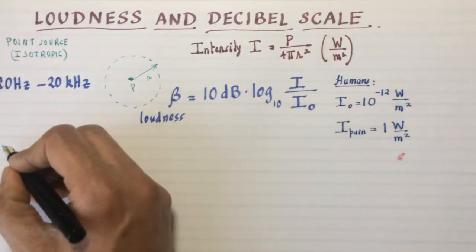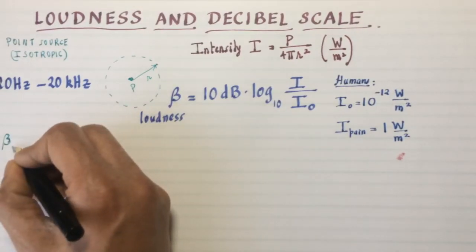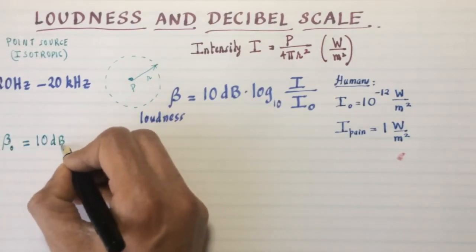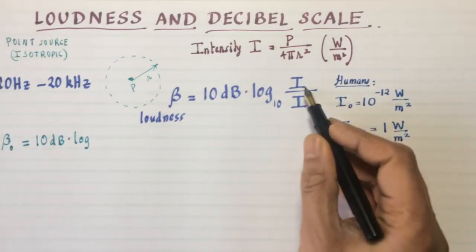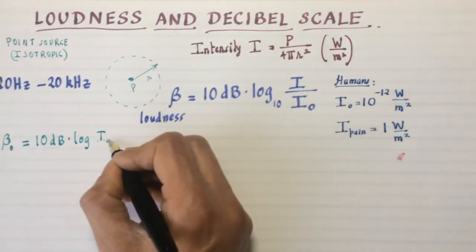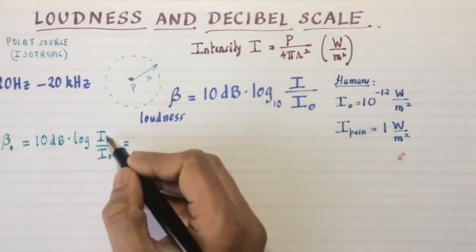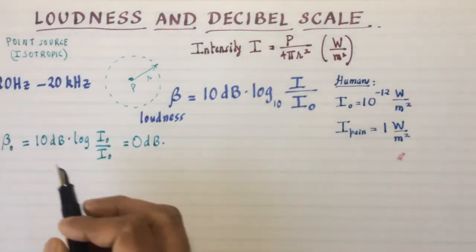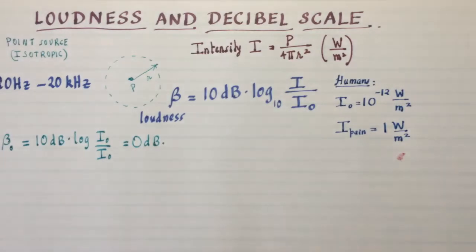Let's find out the betas for the threshold of hearing. β₀, I'll call that. What's that going to be? It's 10 dB times the log of I₀ over I₀. Well, the log of one to any base is zero. So that's going to be zero decibels. It means that at the threshold of hearing, your loudness is zero decibels.